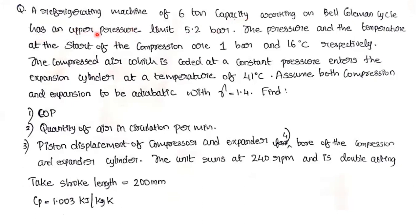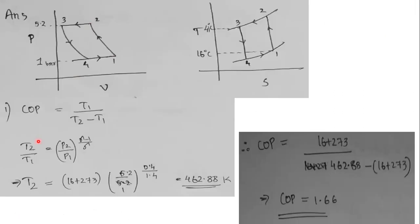The upper pressure limit is 5.2 bar. In the PV diagram, the lower pressure limit corresponds to states P4 and P1, while the upper pressure limit P2 and P3 equals 5.2 bar.